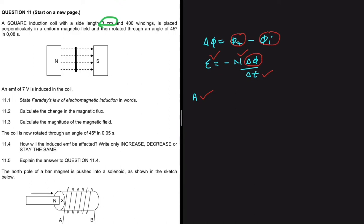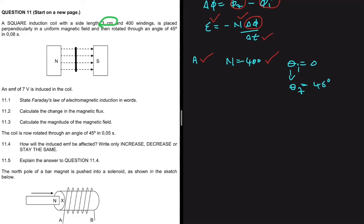The coil has 400 windings — that's just another name for 400 turns — so N equals 400. The coil is placed perpendicularly in a uniform magnetic field, which tells us the initial angle was zero degrees, because when placed perpendicularly the induced EMF is at a maximum. Then it is rotated until the angle theta equals 45 degrees, so the initial angle is zero and the final angle is 45 degrees.